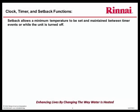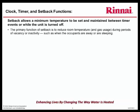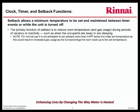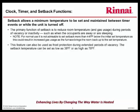Setback allows a minimum temperature to be set and maintained between timer events or while the unit is turned off. The primary function of setback is to reduce room temperature and gas usage during periods of vacancy or inactivity, such as when the occupants are away or are sleeping. Note: for normal use, it is not advisable to set setback more than 4 to 6 degrees below the initial set temperature, as this could result in increased gas usage as the furnace brings the room back up to the set temperature. This feature can also be used as frost protection during extended periods of vacancy. The setback temperature can be set as low as 38 degrees Fahrenheit or as high as 78 degrees Fahrenheit.